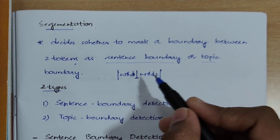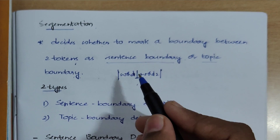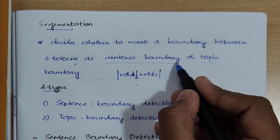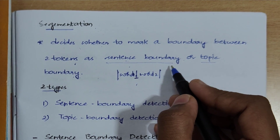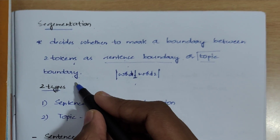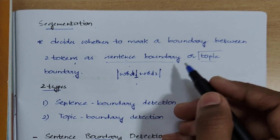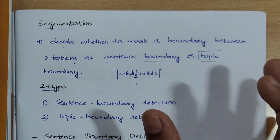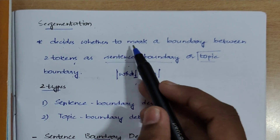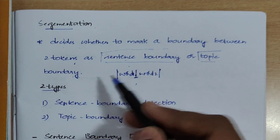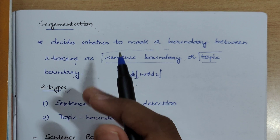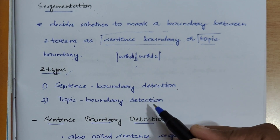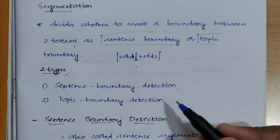The segmentation process detects the sentence boundary — that is the end of the sentence — or it detects the topic boundary, which means it detects whether that particular topic or paragraph ends. So the main aim of segmentation is finding the sentence boundary or topic boundary. There are two types: sentence boundary detection and topic boundary detection.